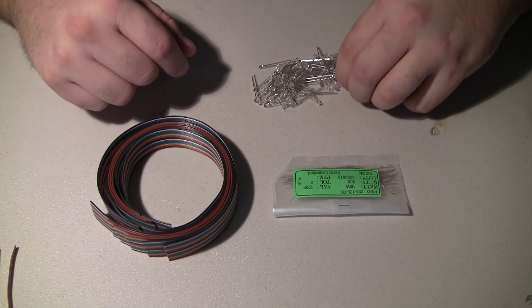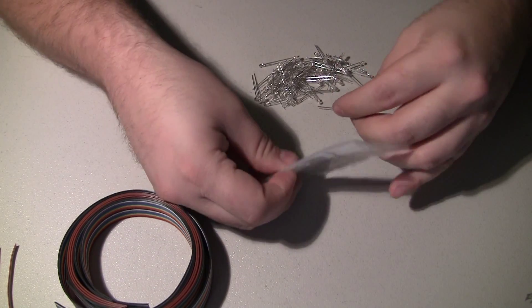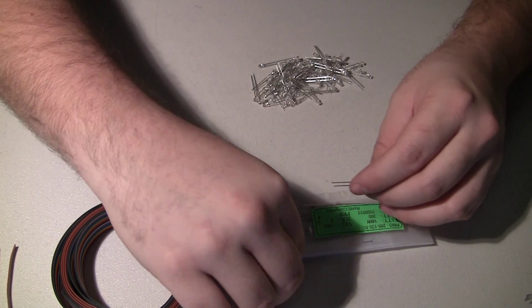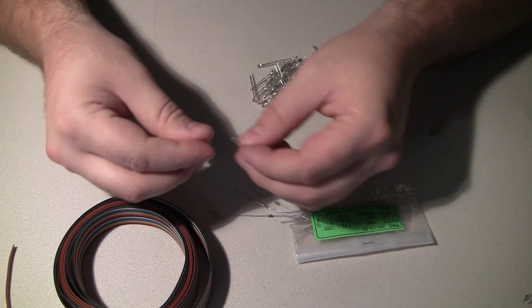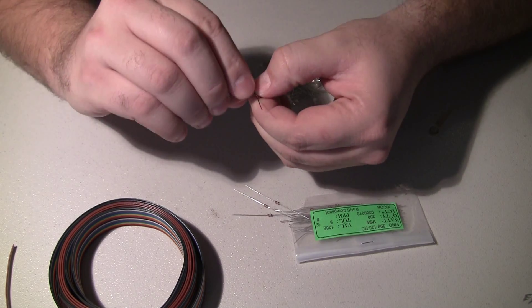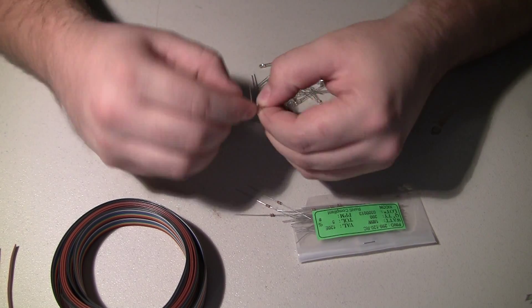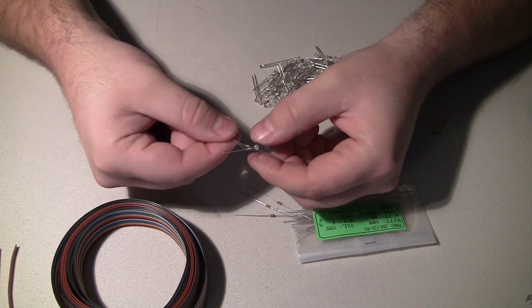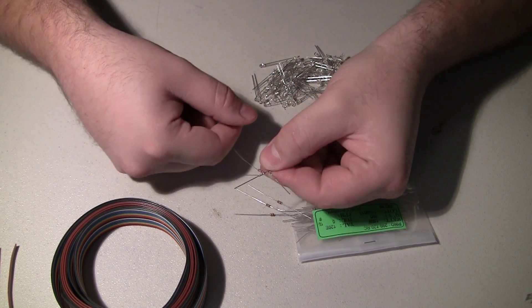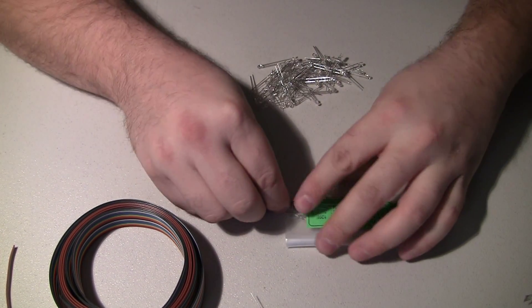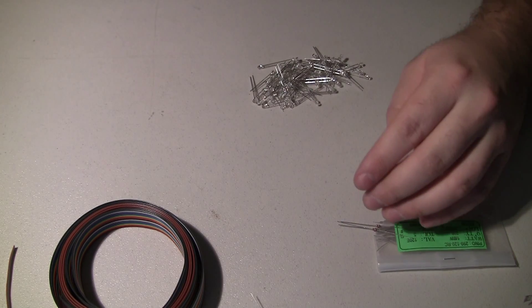So I usually start with putting a bunch of the LEDs and resistors together. I'll spread the legs of the LED, wrap one leg of the resistor around the cathode of the LED like that. And I'll do a bunch of those.